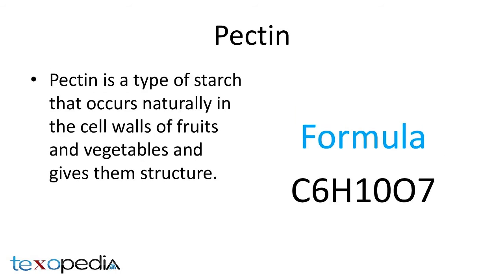What is pectin? Pectin is a type of starch called a heteropolysaccharide that occurs naturally in the cell walls of fruits and vegetables and gives them structure. For example, pectin is a natural and commercially produced essential ingredient in preserves like jelly and jam. Without pectin, jellies and jams cannot set.